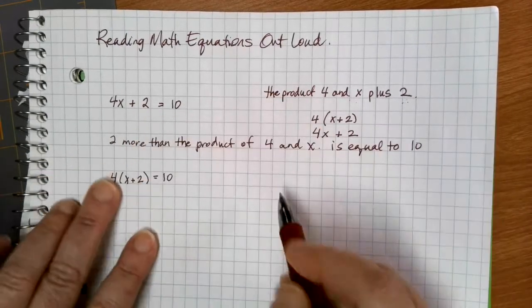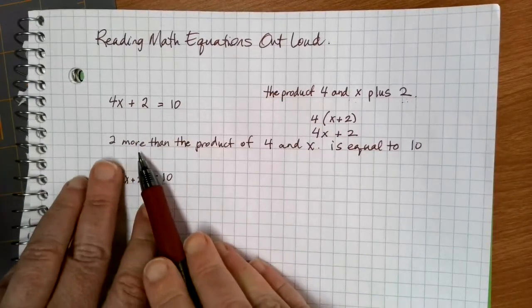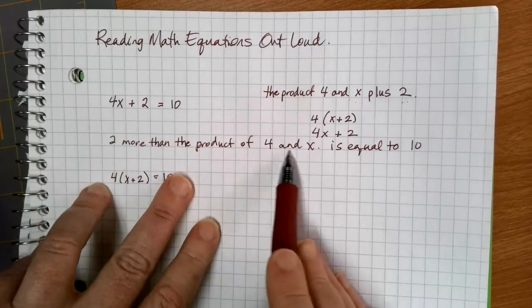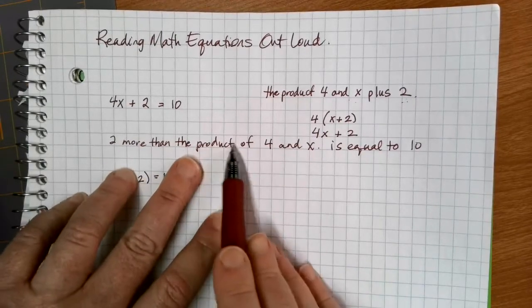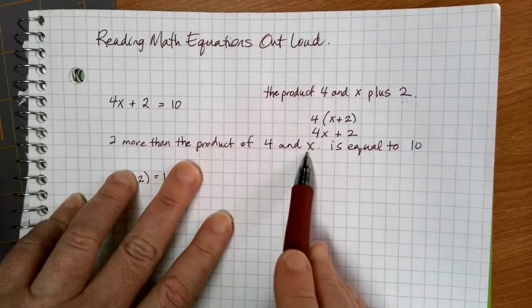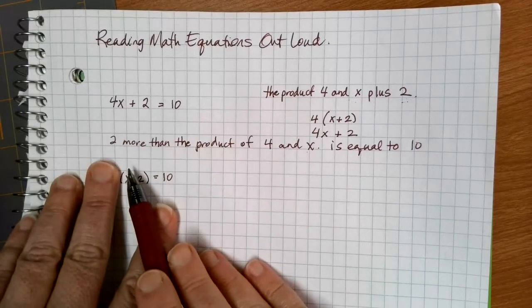We don't want to forget the last part of our equation there. But here, by adding the 2 is more than the product of 4 and x, it's very clear that the product or the multiplication is only between 4 and x and that the 2 is being added later.